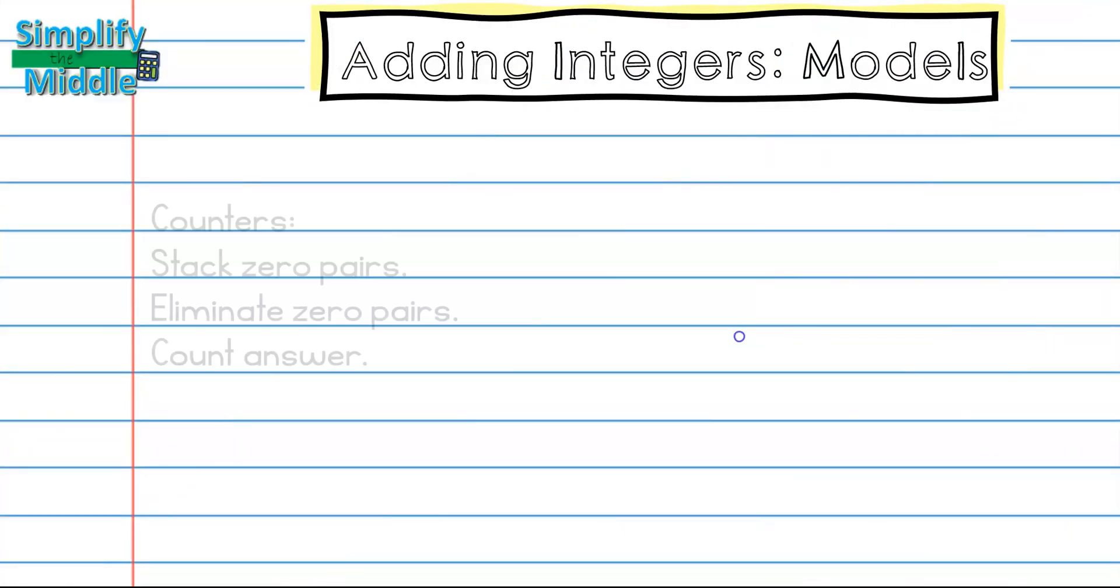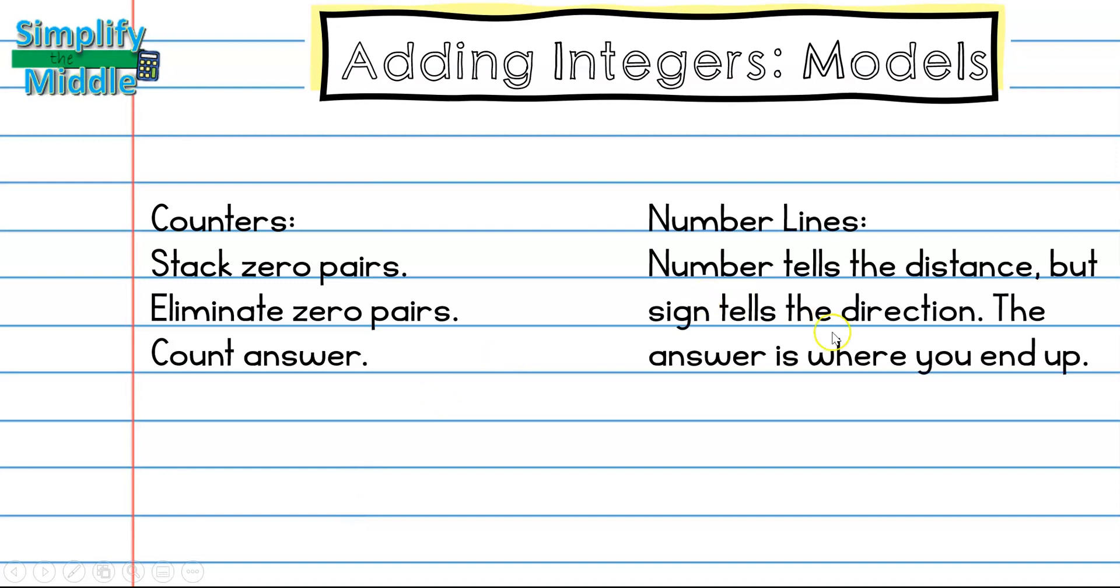So that is how we add with models. Let's recap. We know with counters we want to make sure we stack any zero pairs so any different colors. We want to eliminate our zero pairs before we count our answer. For number lines we know that the number in the problem is going to tell us the distance but the sign will tell us the direction and the answer is where you end up.